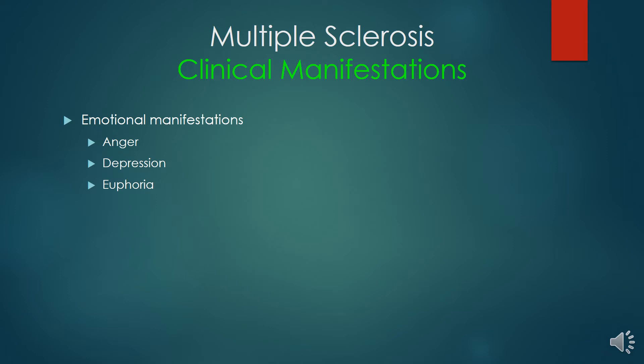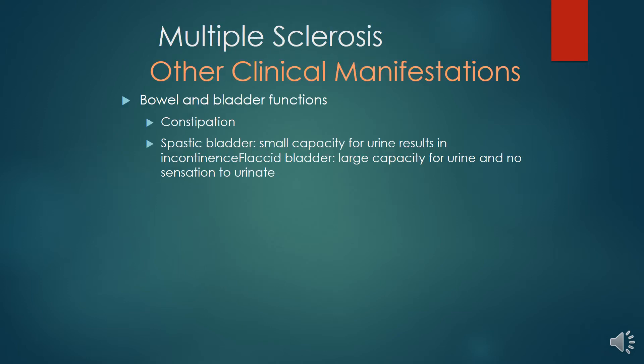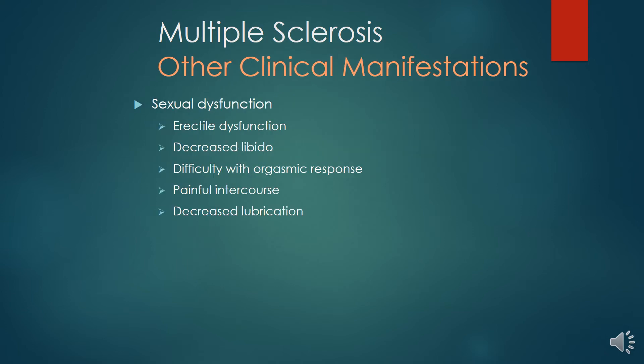Emotional manifestations include anger, depression and euphoria. Other manifestations include bowel and bladder problems which include constipation, spastic bladder with small capacity for urine resulting in incontinence, and flaccid bladder with large capacity of urine and no sensation to urinate. Sexual dysfunction includes erectile problems, decreased libido, difficulty in orgasmic response, painful intercourse and decreased lubrication.